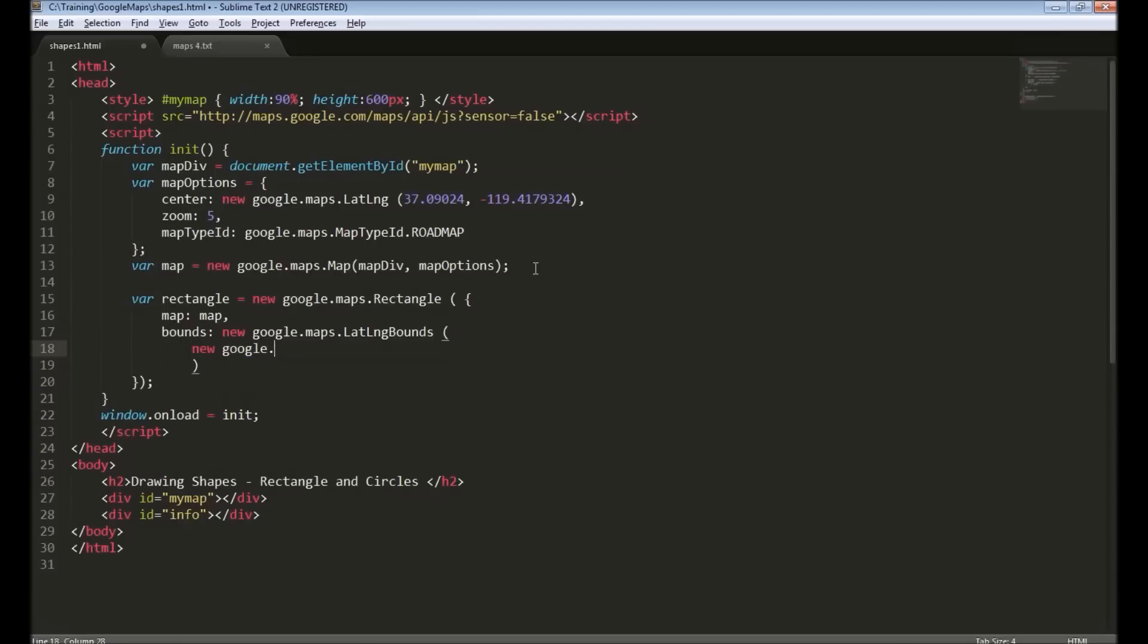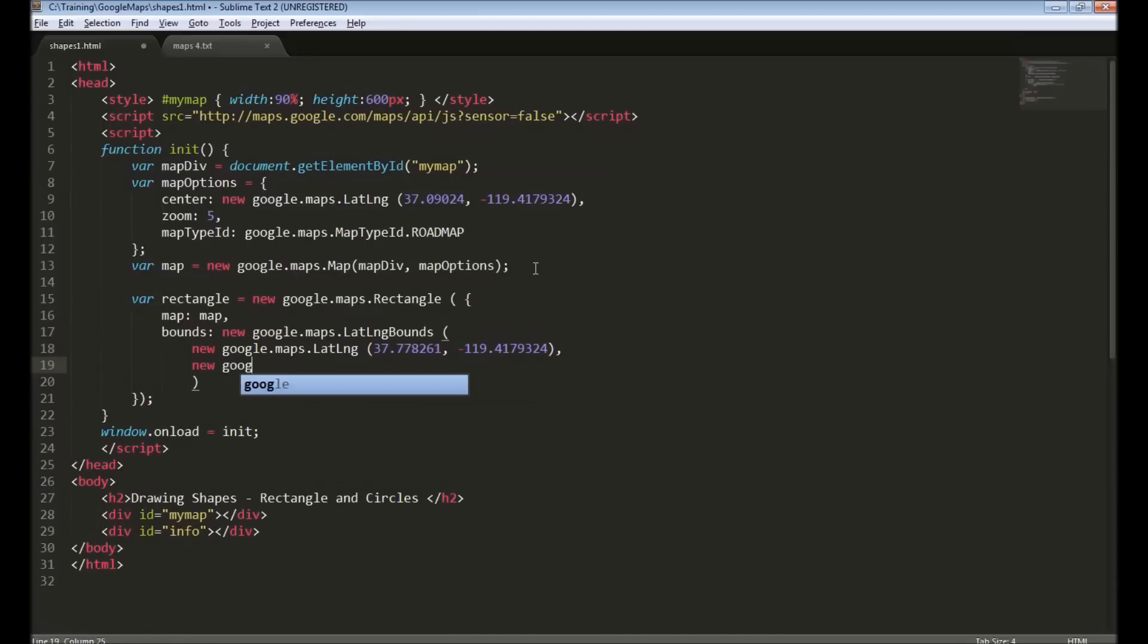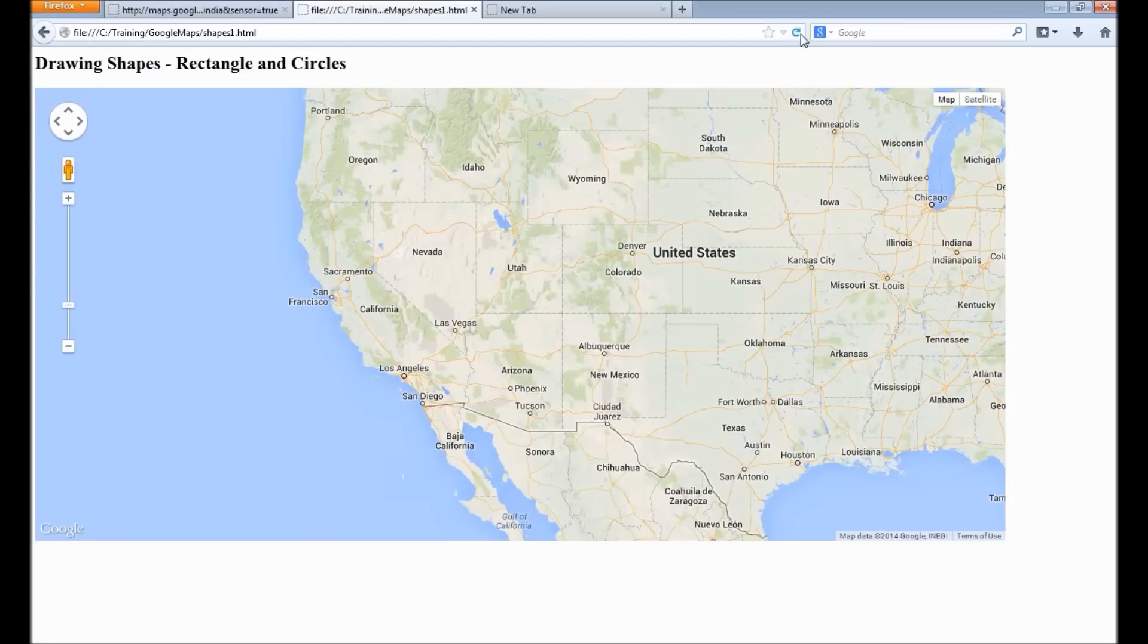Provide two coordinates, somewhere near California and another one near Las Vegas. Alright, we have created the rectangle object. We are providing the map reference and the bounds. I will save the file and reload the page in the browser.